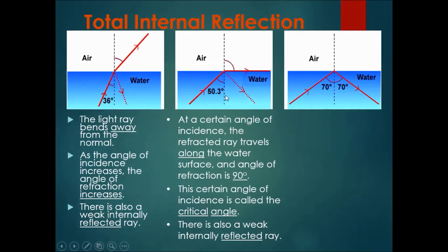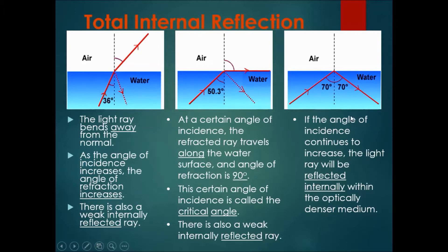However, what happens when we increase this angle even more? Does it continue to refract over here? The answer is no. If the angle of incidence continues to increase, the light ray will be reflected internally within the optically denser medium. If we increase the angle from 50.3, let's say to 70 degrees, then the light would not come out into the air at all. It would only undergo a simple reflection.